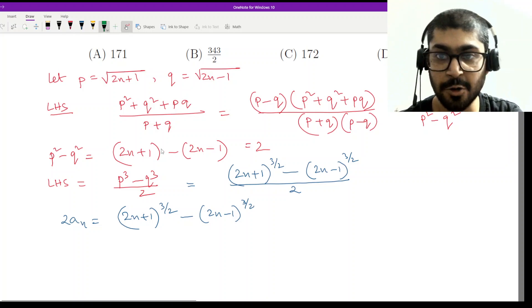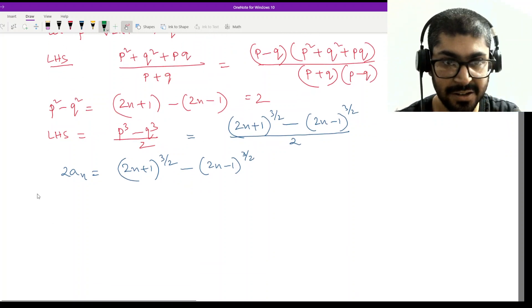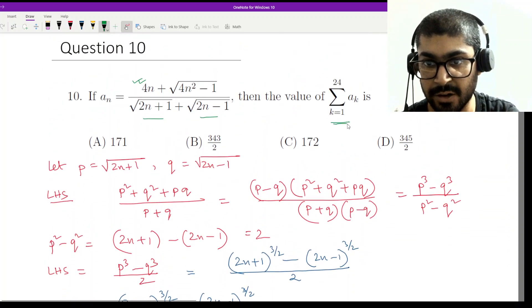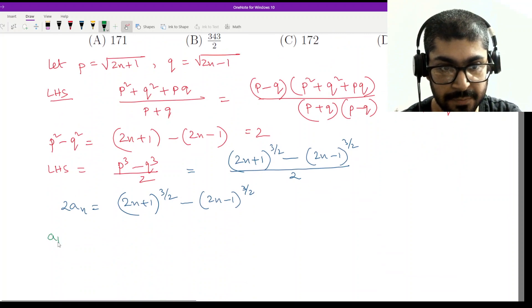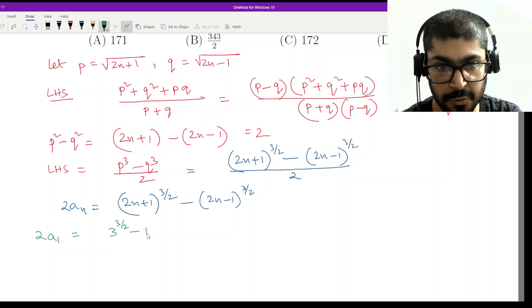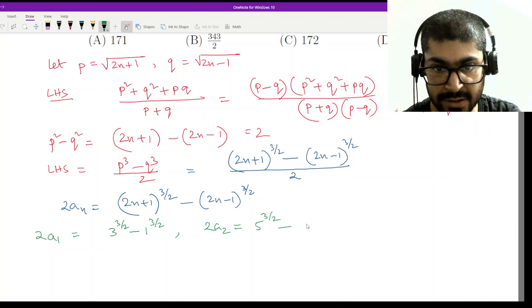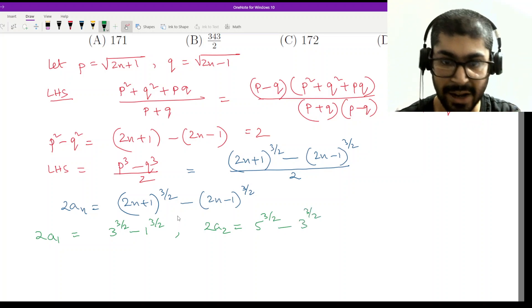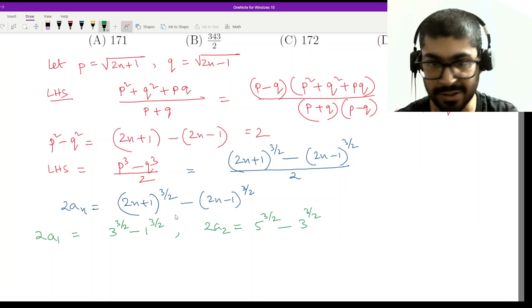So now let us look into how the terms would look like. I have to sum these from term 1 to term 24. So if I want that then twice of a_1 would be 2 into 1, 3 to the power 3 by 2 minus 1 to the power 3 by 2. Twice of a_2 that would be 5 to the power 3 by 2 minus 4, 3 to the power 3 by 2. So if I add a_1 and a_2, twice of a_1 and twice of a_2 what would I get?